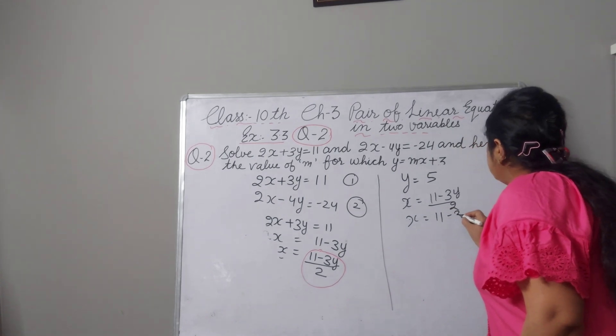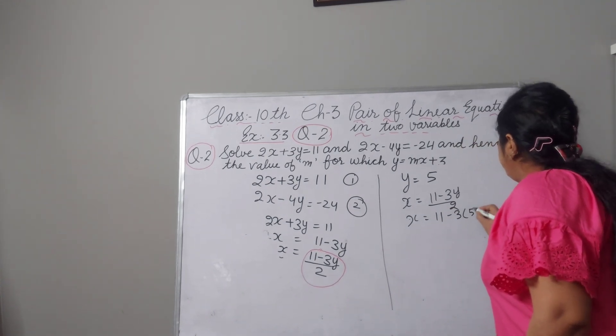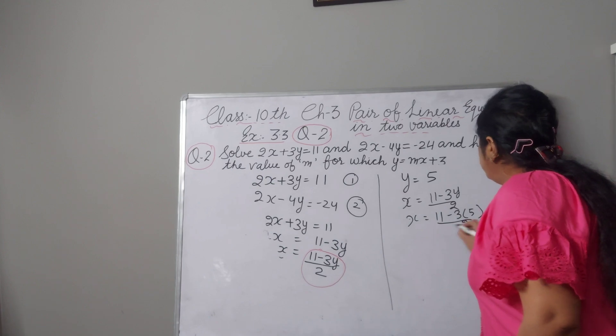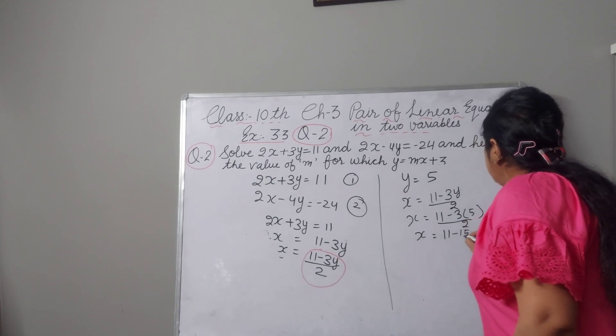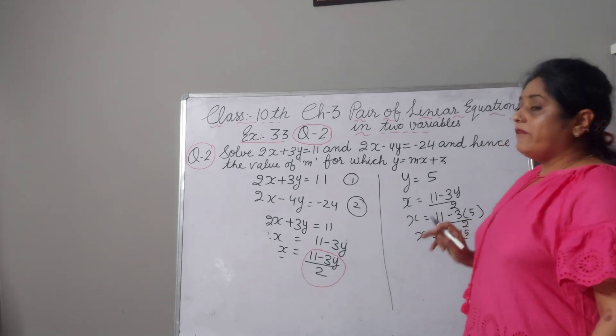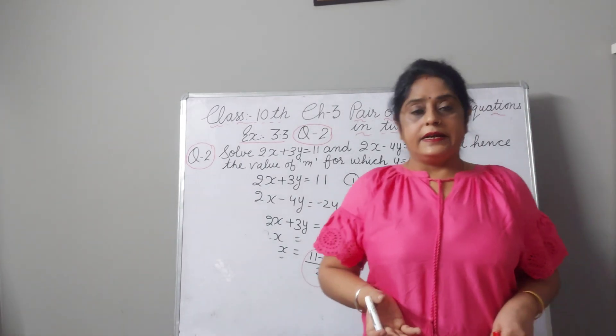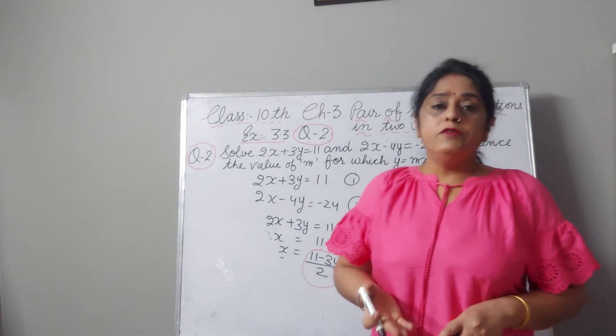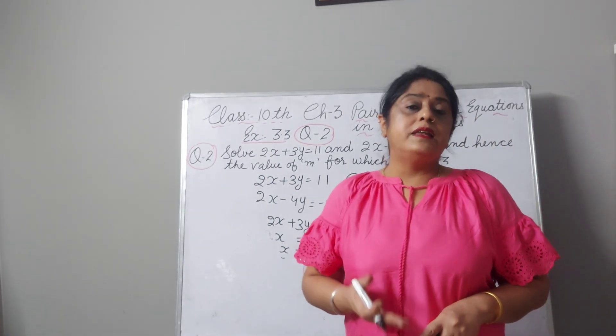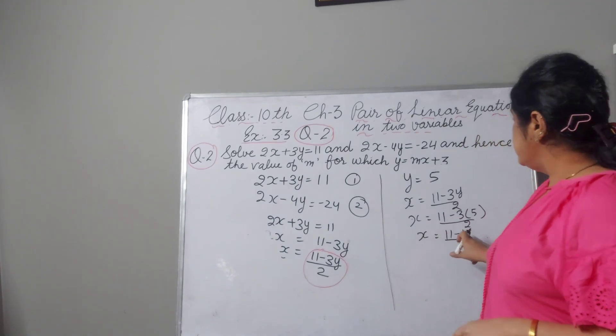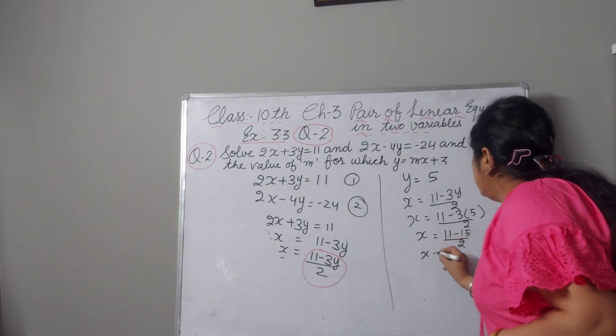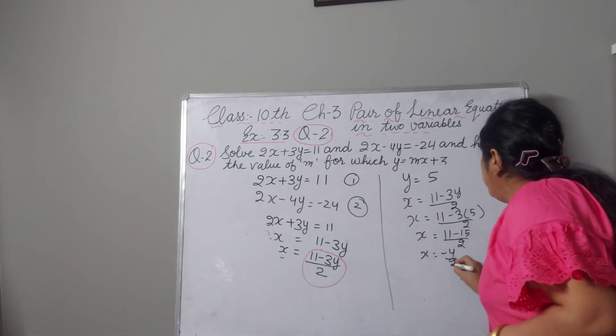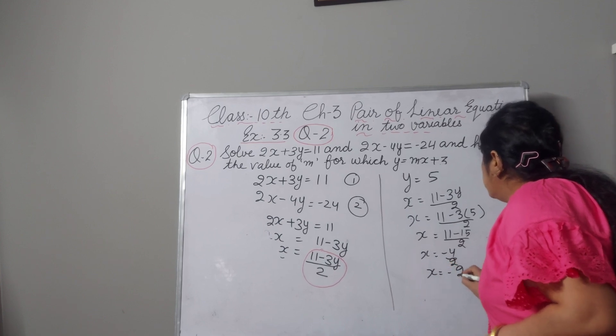x is 11 minus 3 in place of y, I will write 5 upon 2. x is 11 minus 15 upon 2. 11 is positive and 15 is negative. And when one sign is positive and one is negative, we subtract and sign will become the larger one. Here larger one is minus 15. x will be minus 4 upon 2 and x value we will get minus 2.